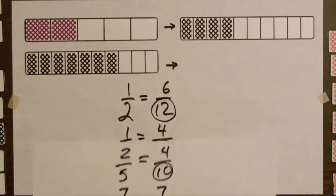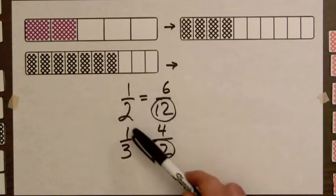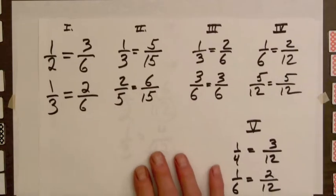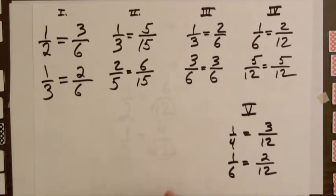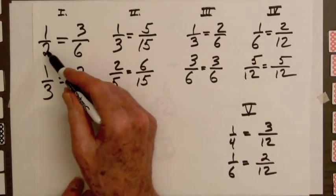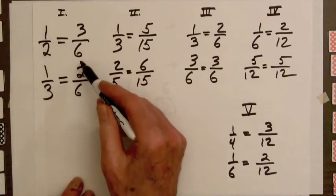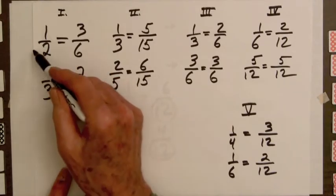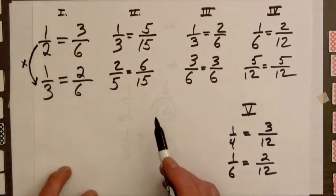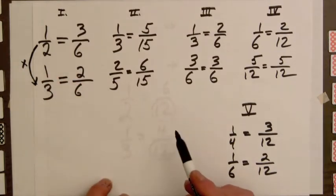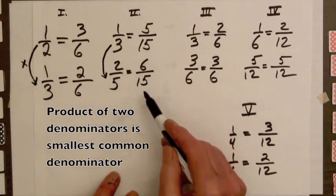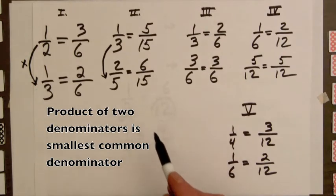Let's look at some pairs of fractions involving common denominators and look for patterns. Students might notice in this case that the denominator is two times three is six. In this case six is the smallest common denominator. So here they are multiplying the denominators to obtain the smallest common denominator. In example two, three times five is fifteen, which is the smallest common denominator.